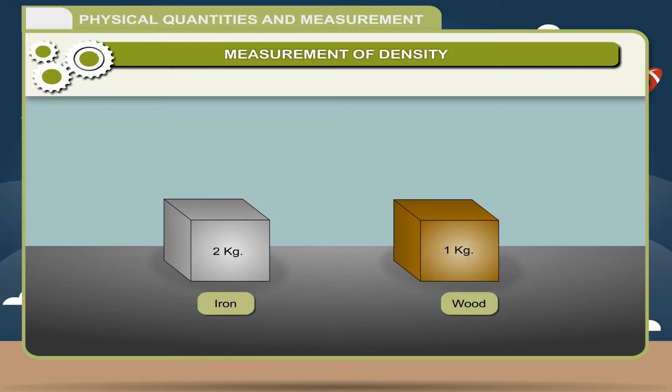Measurement of density of regular solids. It is normally said that iron is heavier than wood. It means iron will weigh more than wood if both are of the same volume. For this, the term density is used.